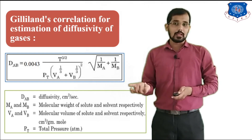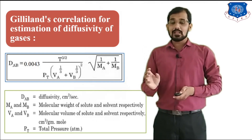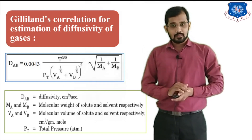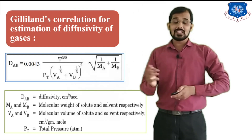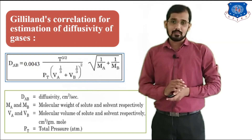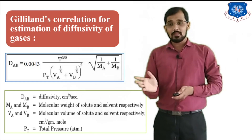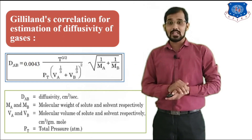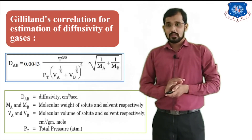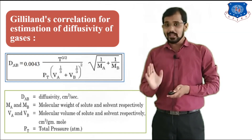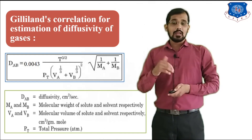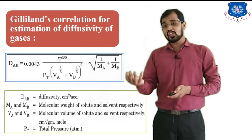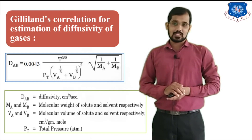Be careful while solving numericals: whatever units are given by these correlations, you must use them. If diffusivity is given in m²/s, you must convert it to cm²/s, because the Gilliland experimental relation uses those units. In the exam, this relation can be asked for 3 marks, and a numerical based on it can also be asked for 3 marks.